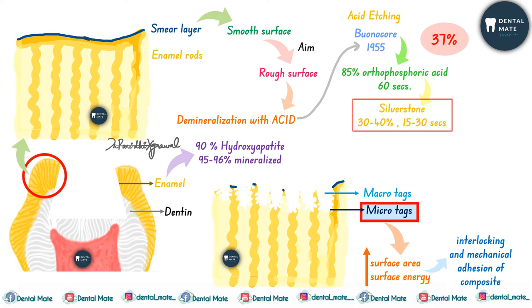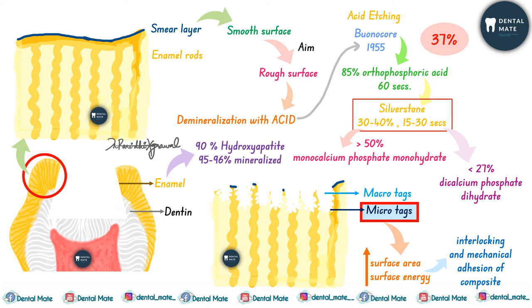Presently, 37 percent phosphoric acid is preferred. Silverstone found that if more than 50 percent phosphoric acid was used, it led to the formation of monocalcium phosphate monohydrate, which prevented further dissolution — a precipitate was formed from excess demineralization. If less than 27 percent phosphoric acid is used, dicalcium phosphate dihydrate forms, which cannot be easily removed, hindering proper resin tag formation and adhesion.